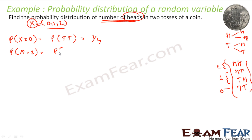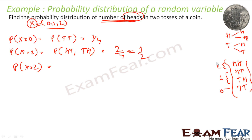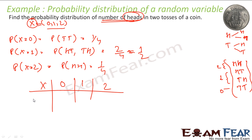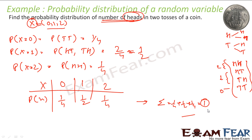Probability of x equal to 1 is either HT or TH — that is two options — so 2 by 4, which is 1 by 2. Probability of x equal to 2, that is getting heads twice, is HH, which is 1 by 4. If you add all these: 1/4 plus 1/2 plus 1/4 equals 1.